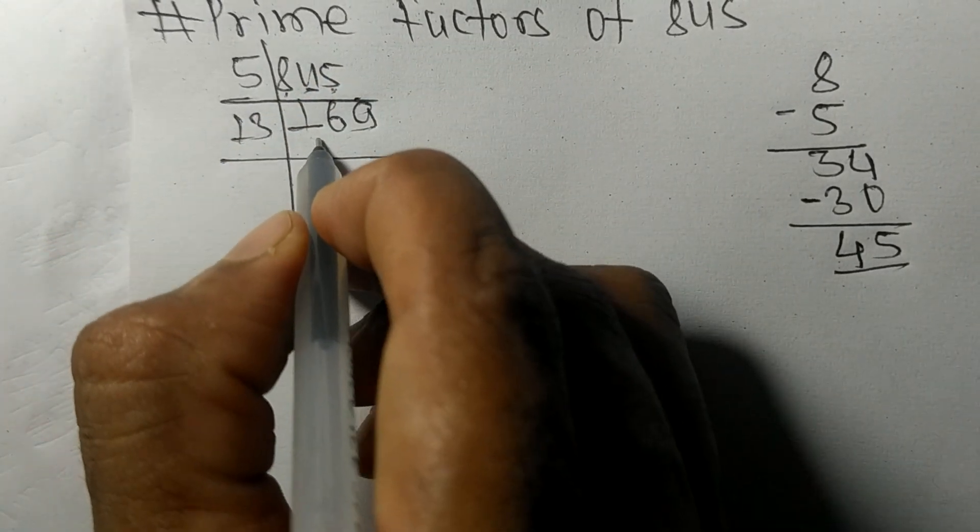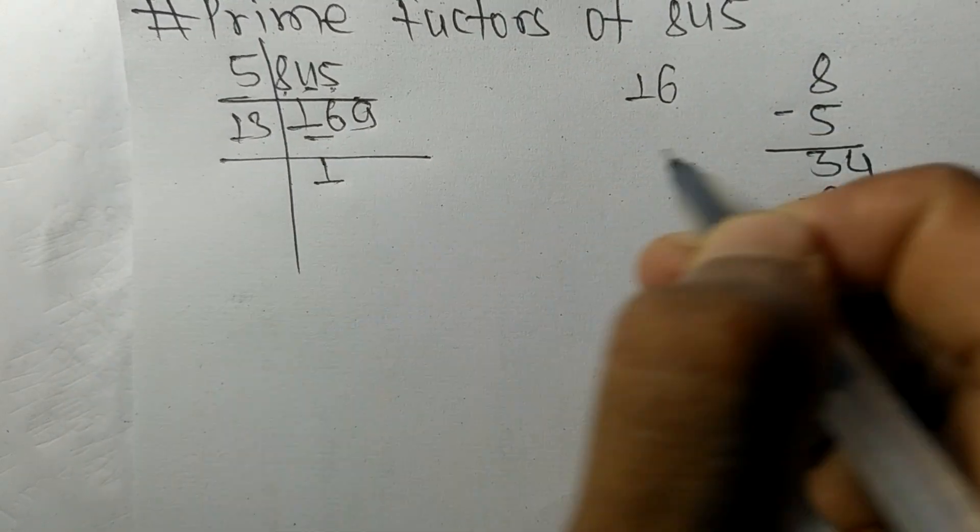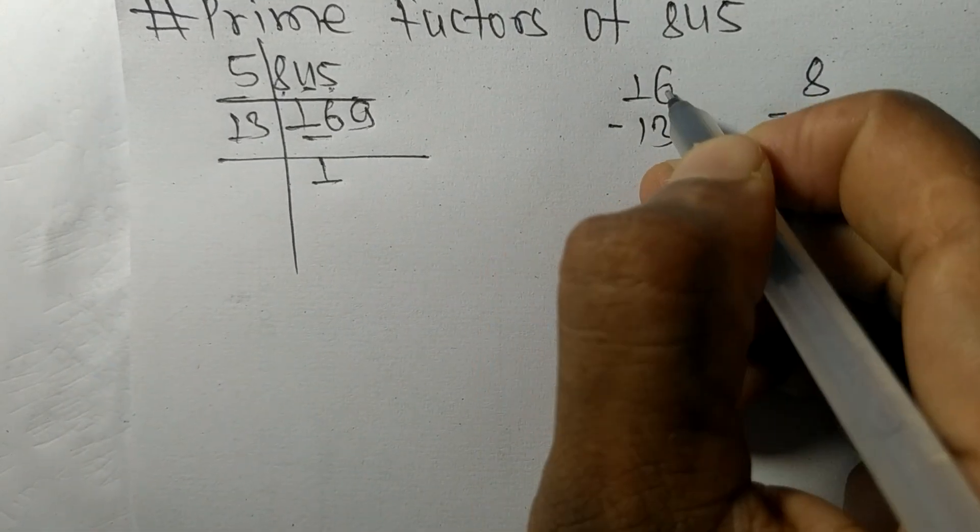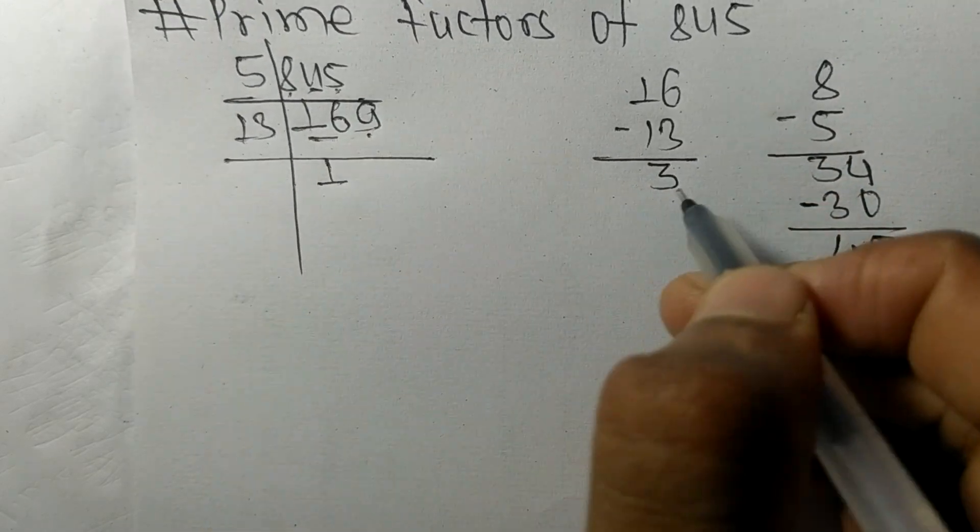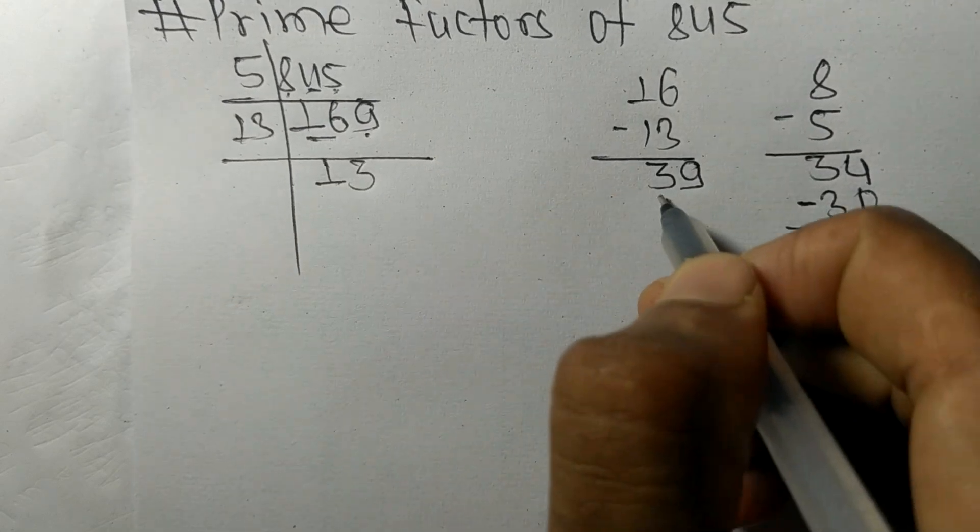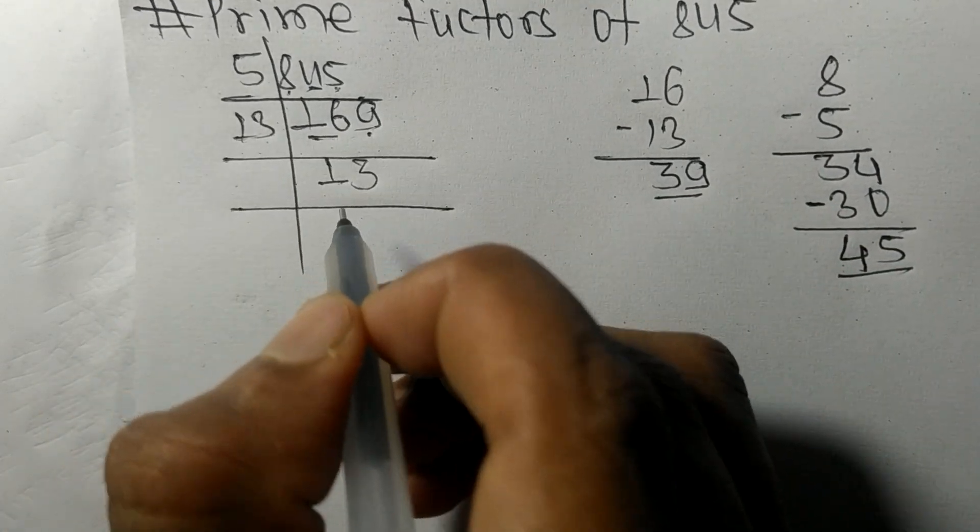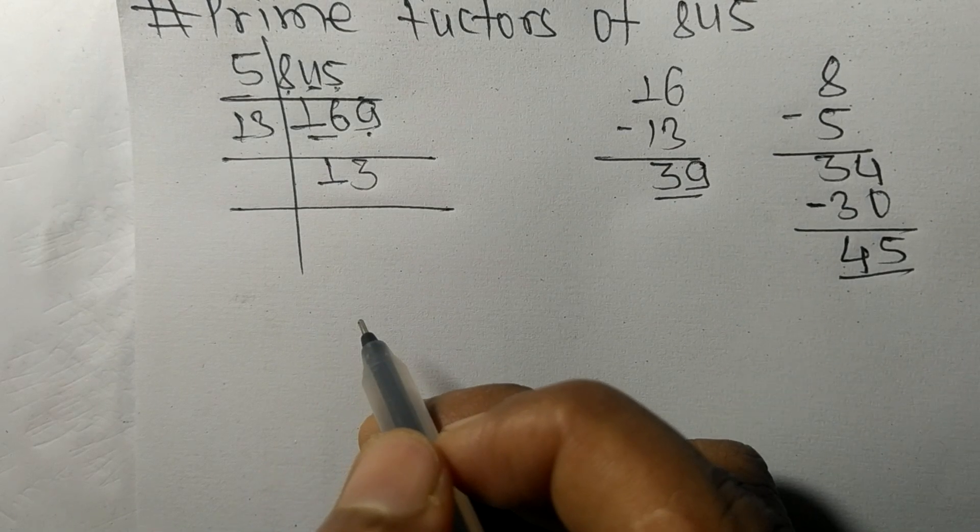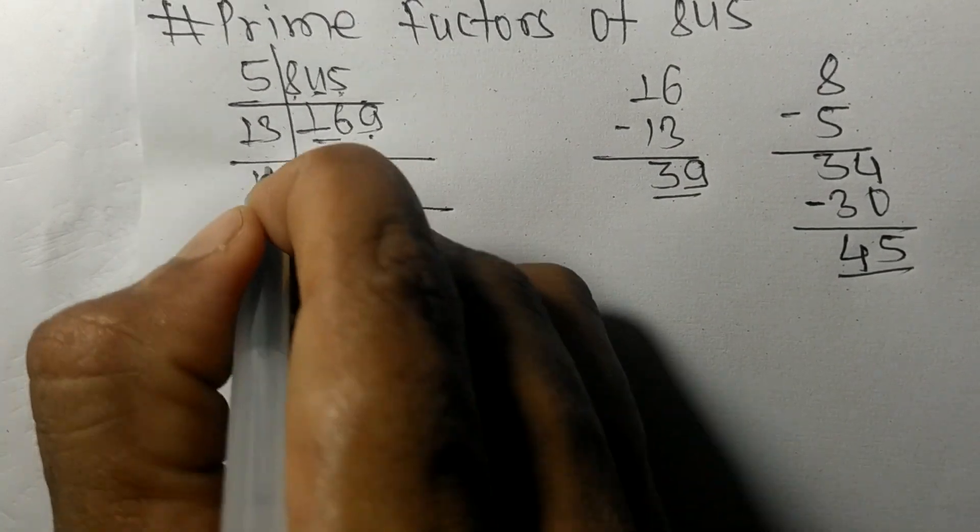First we have 16. 13 times 1 means 13. On subtracting we get 3, this 9, 39. So 13 times 3 means 39. Now we got 13 which is our prime number, so it is exactly divisible by 13 only.